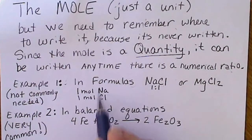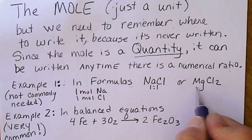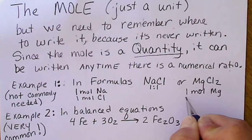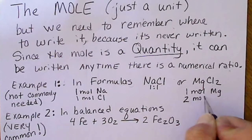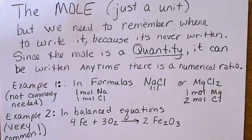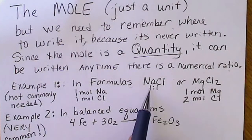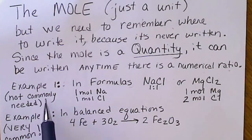So we could insert the word mole there. For magnesium chloride, we could say there's one mole of magnesium for every two moles of chloride ions. This is an example of where we can write the mole, it's just not common.